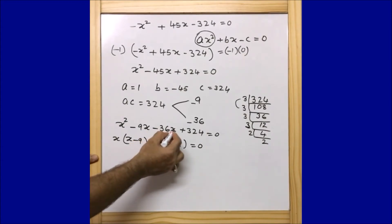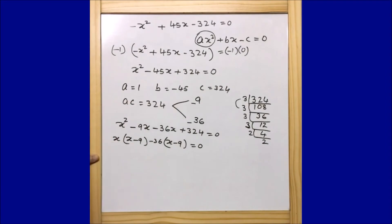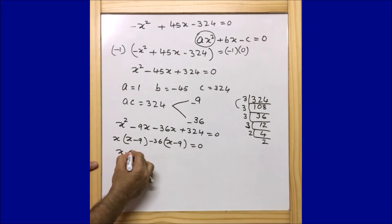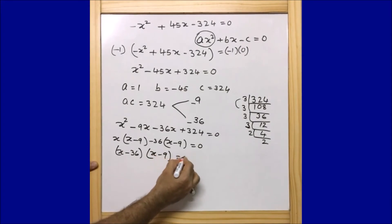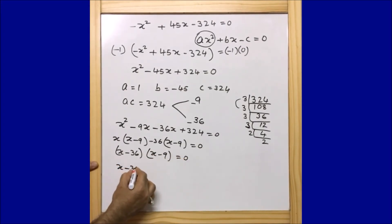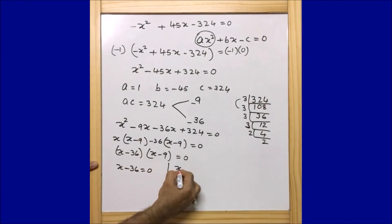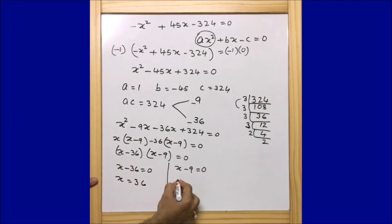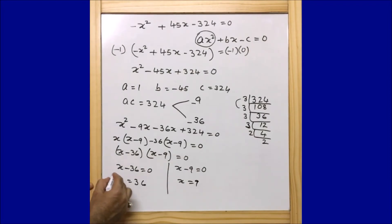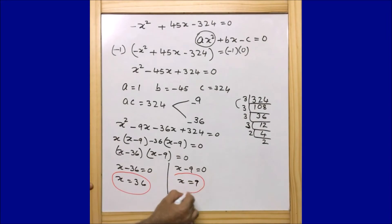The two equations are: x minus 36 equals 0 and x minus 9 equals 0. So x equals 36 or x equals 9. You can see how easily we found the factors. One solution is x equals 36 and the other is x equals 9. I hope you understood this process.